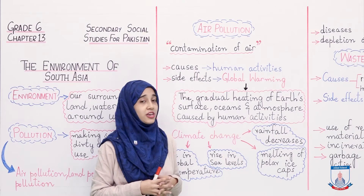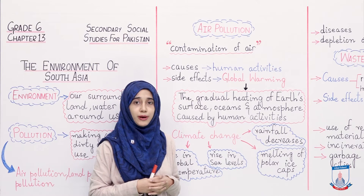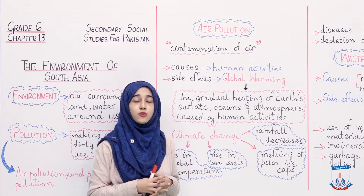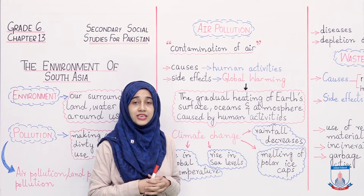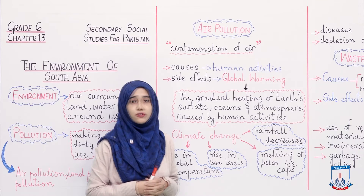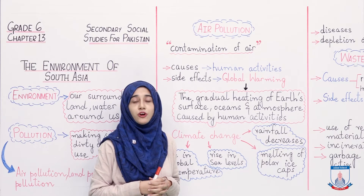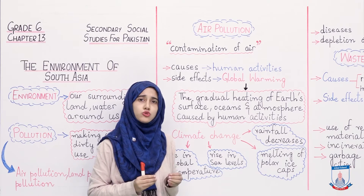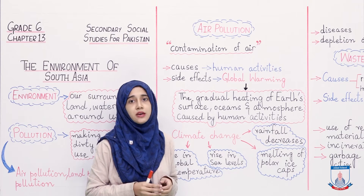What are the causes of air pollution? The major causes of air pollution are our own human activities. For example, if we burn waste products, that causes air pollution. Besides that, the smoke that comes from our vehicles also comes under causes of air pollution. These are some of the major causes, though there are many smaller causes too.